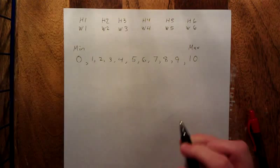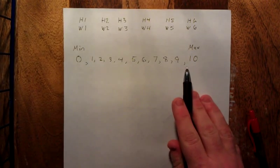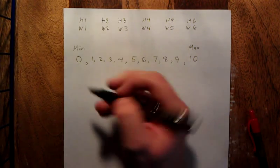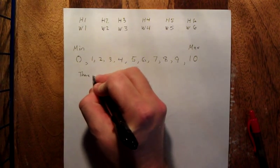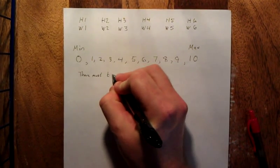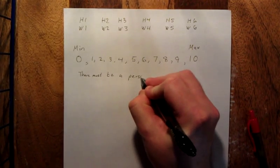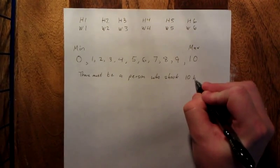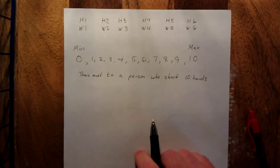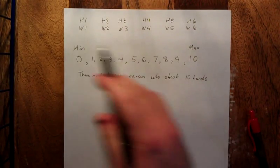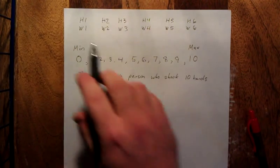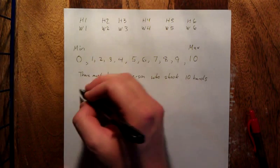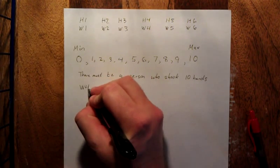So what we have written here are the 11 responses from the people other than the host for how many hands did you shake. So here's what we're going to do - we're going to say there must be a person who shook ten hands. Without loss of generality, I can call that literally anybody here. It could be a husband, it could be a wife, it could be anybody one through six. Out of complete arbitrariness I'm going to say that wife number four shook hands with ten people.